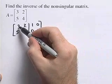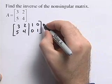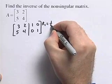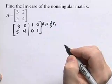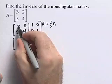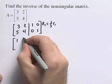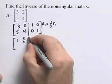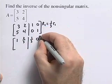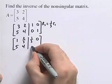First thing we want to do is get a 1 in this first row, first column entry. To do that, our new row 1 will equal 1/3 times our old row 1. So we need to multiply this first row by 1/3. 1/3 times 3 gives us 1. 1/3 times 2 is 2/3. 1 times 1/3 is 1/3. 0 times 1/3 is 0. We haven't done anything to our second row, so we'll just rewrite that.